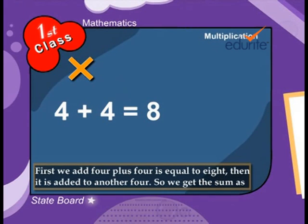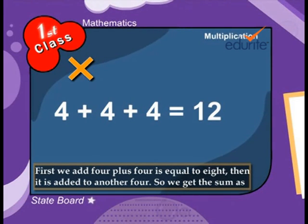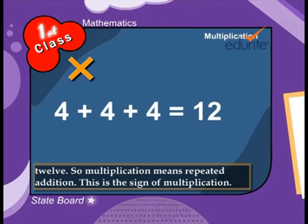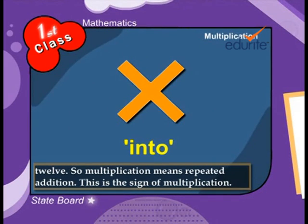First, we add 4 plus 4 is equal to 8, then it is added to another 4. So we get the sum as 12. So multiplication means repeated addition. This is the sign of multiplication.